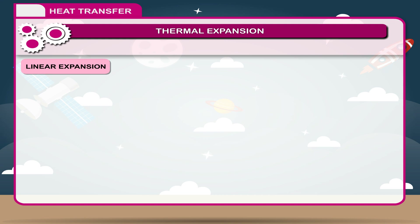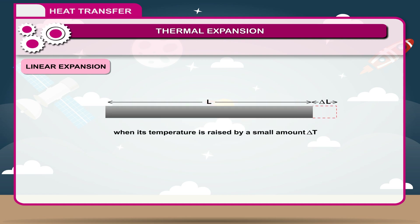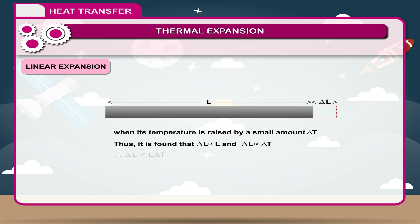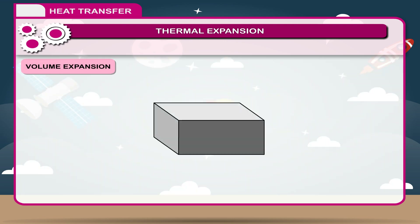Linear expansion: Suppose L be the original length of a solid rod. Let ΔL be the small increase in the length of the rod when its temperature is raised by a small amount ΔT. It is found that ΔL is directly proportional to L and ΔL is directly proportional to ΔT. Therefore, ΔL is directly proportional to L·ΔT.